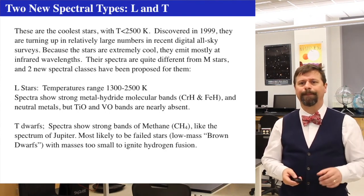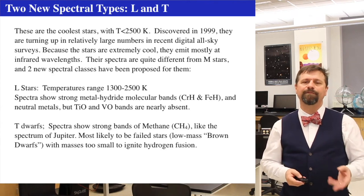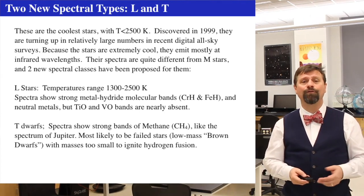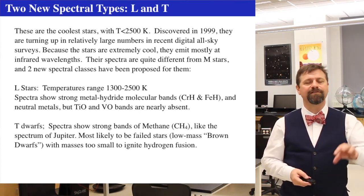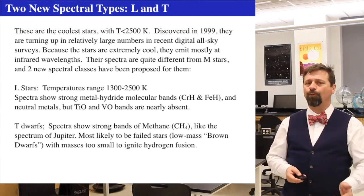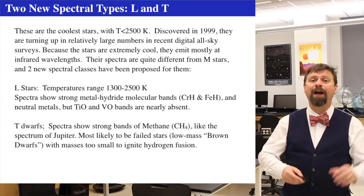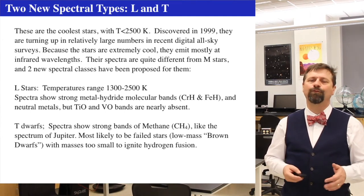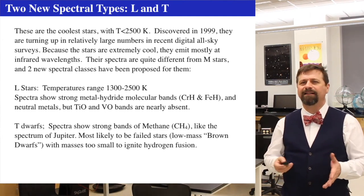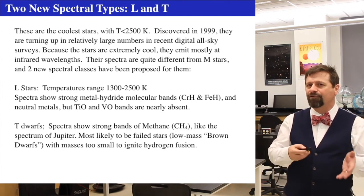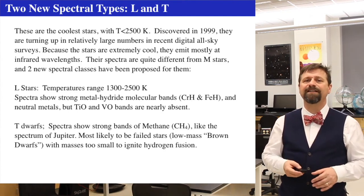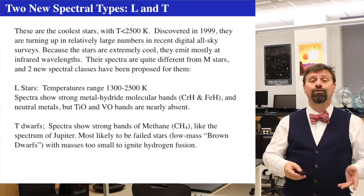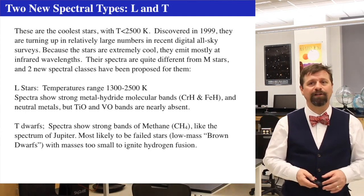If you go even cooler — sub-1,300 Kelvin — you get what are called T-dwarfs, which are really strange. They have methane and ammonia, and could be considered failed stars — the brown dwarfs. The difference between a T-dwarf and Jupiter is really fuzzy. We don't think most T-dwarfs are massive enough to ignite hydrogen in their cores to make them actually stars. The boundary between a T-star, a red dwarf, a brown dwarf, and a Jupiter is an area of current research.